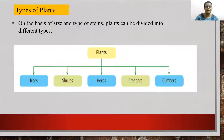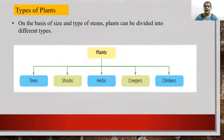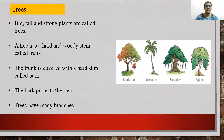Now, different types of plants exist on the basis of size and type of stems. They can be divided into different types: trees, shrubs, herbs, creepers and climbers. Today we are going to discuss about trees, shrubs and herbs. So first one — trees.